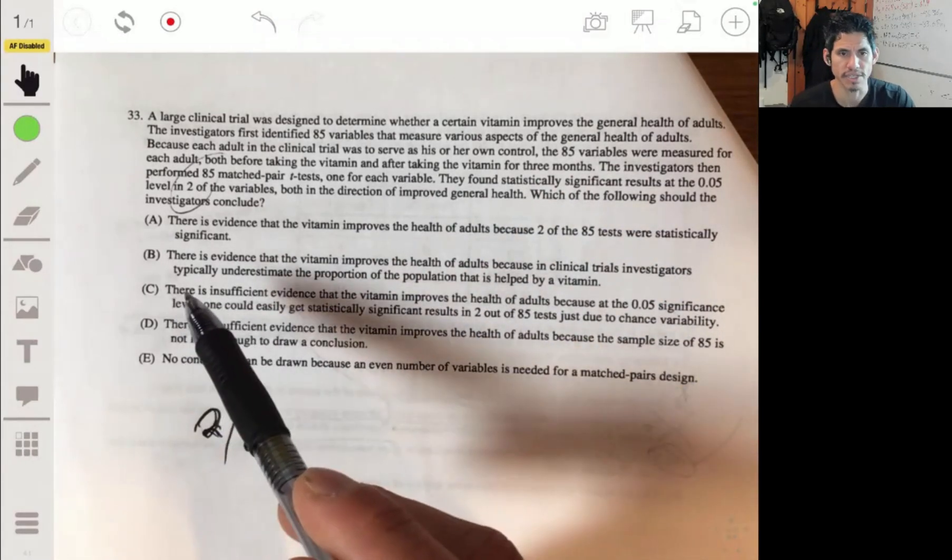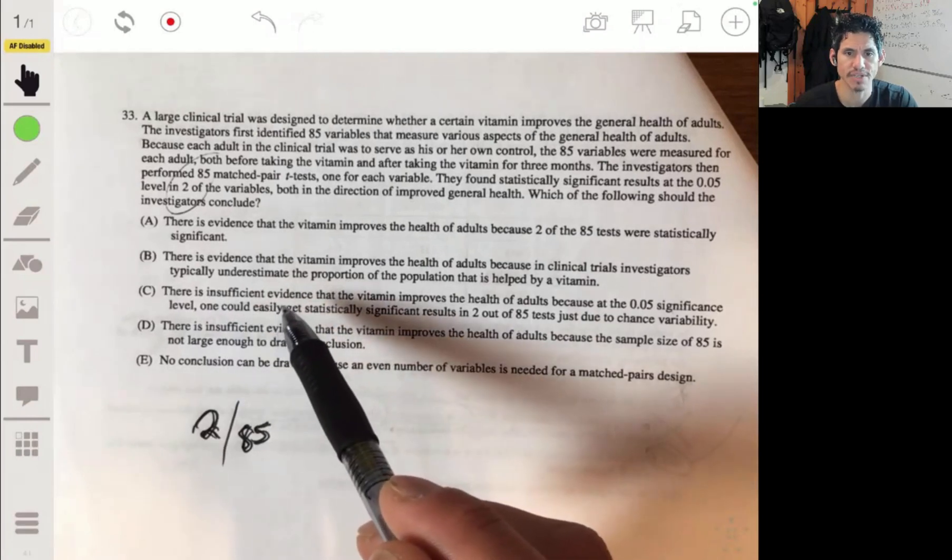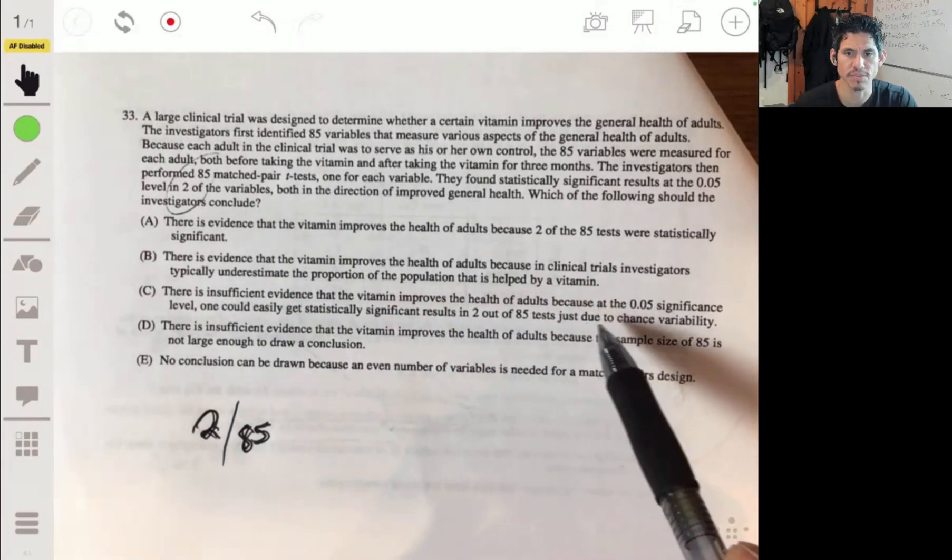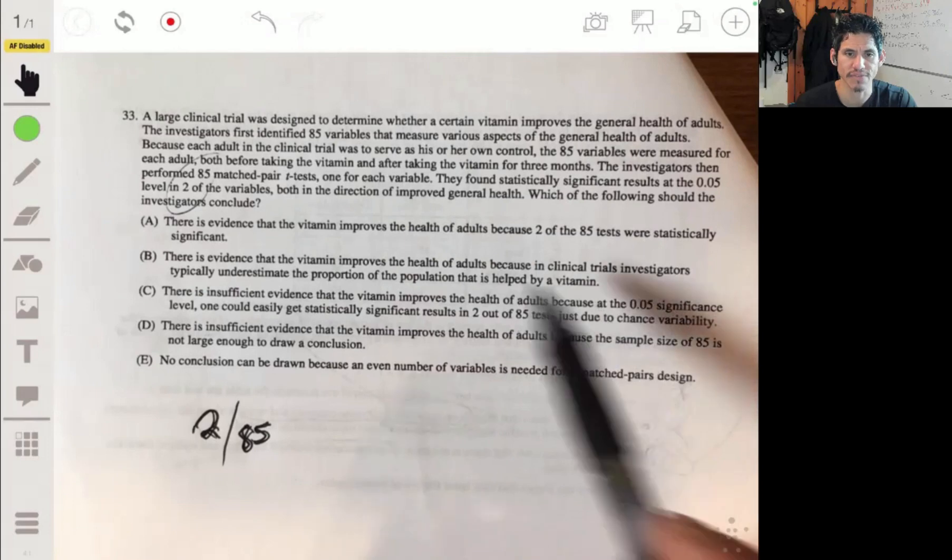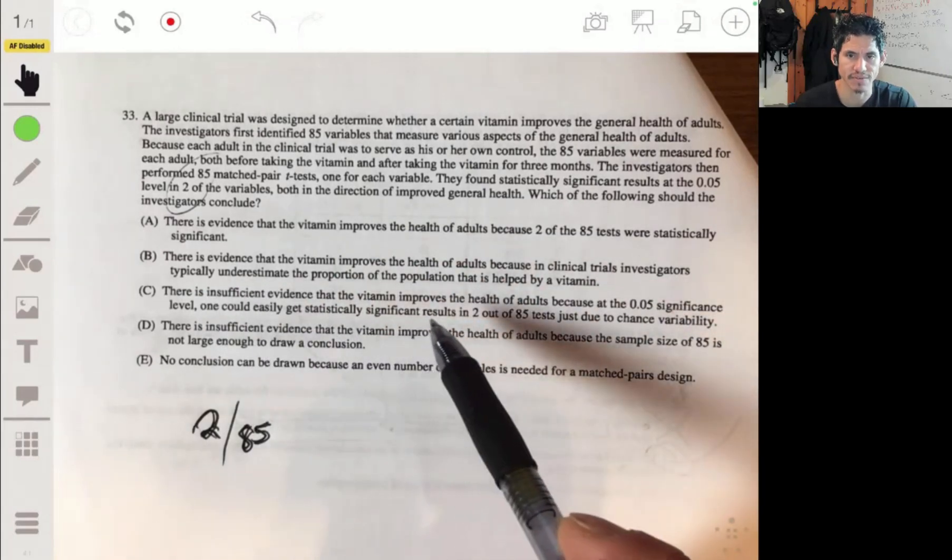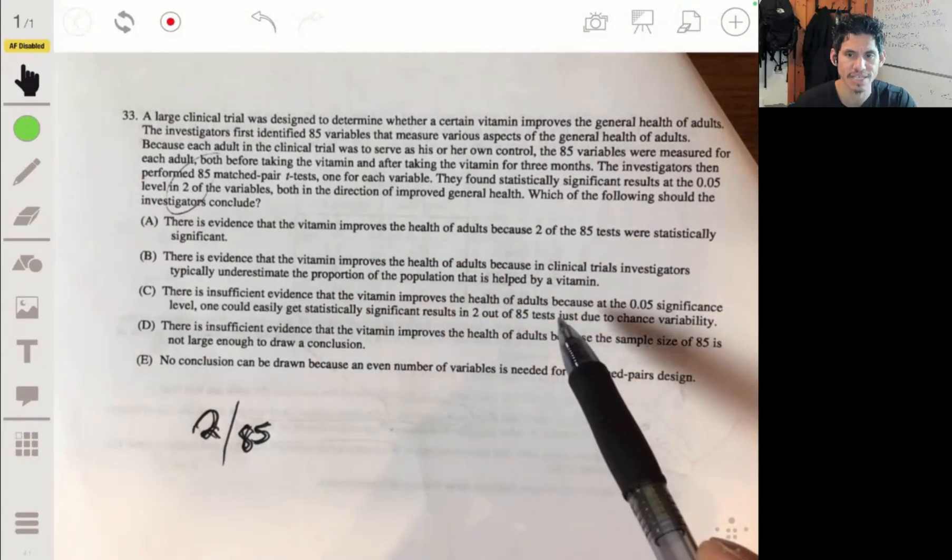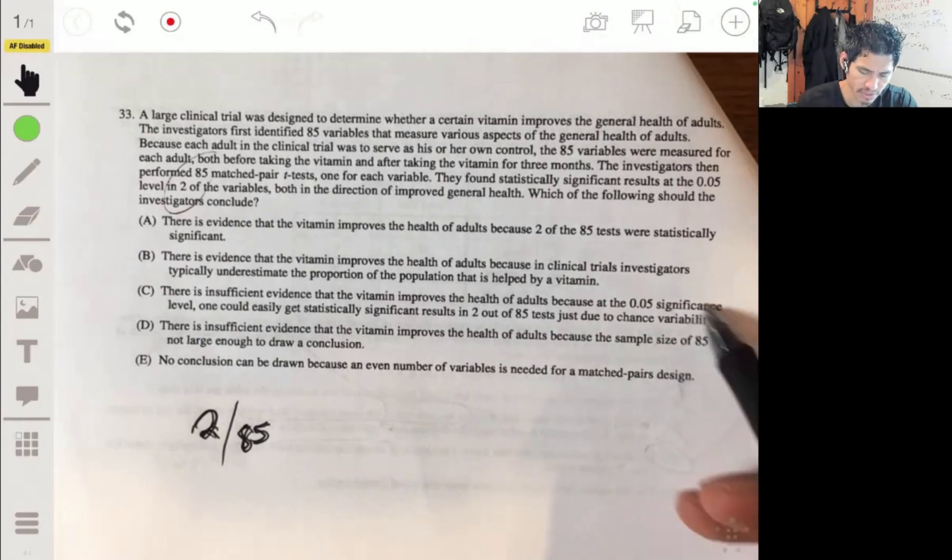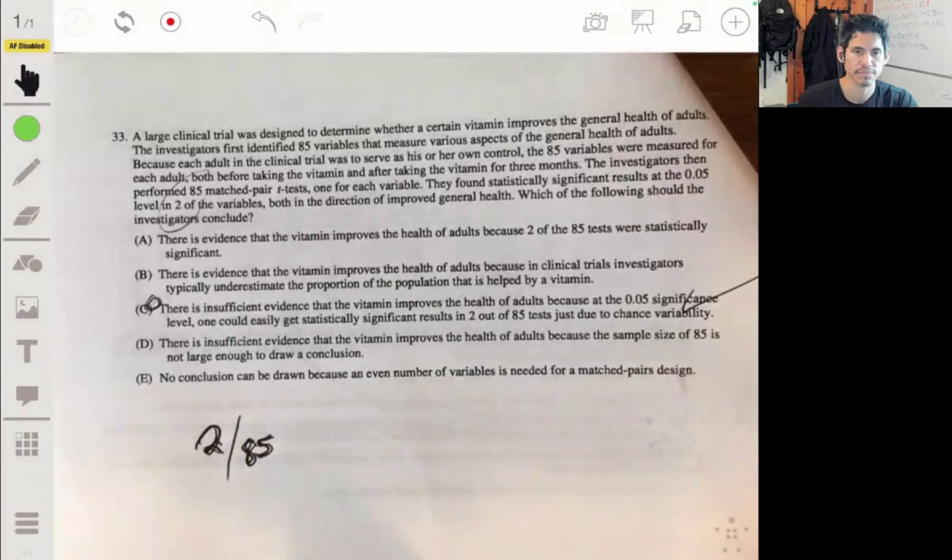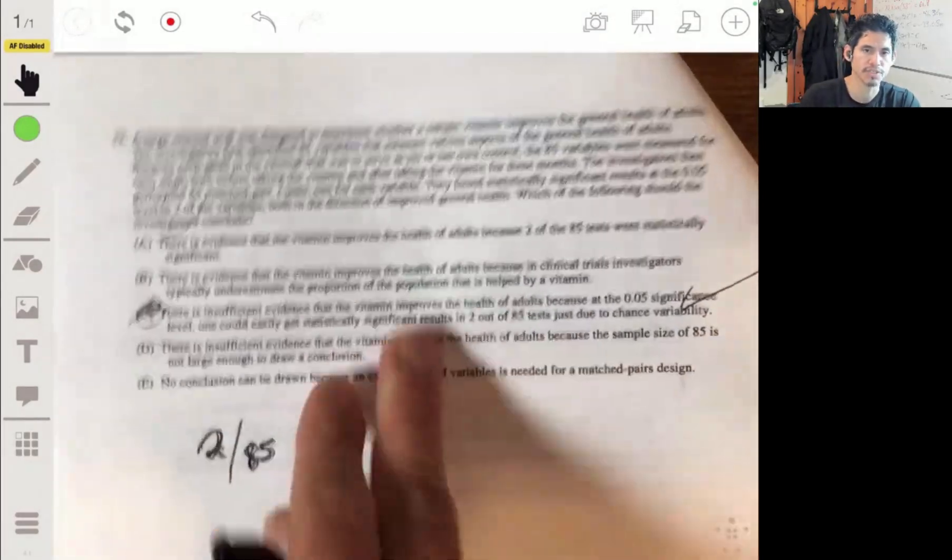So yeah, so C, there's insufficient evidence that the vitamin improves the health of adults because at the 0.05 significance level, one could easily get statistically significant results, two out of 85 tests due to just chance variability. Yeah, so C is our answer. This is a good one to know just for real life.